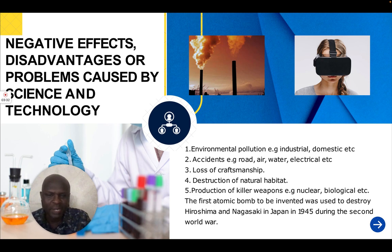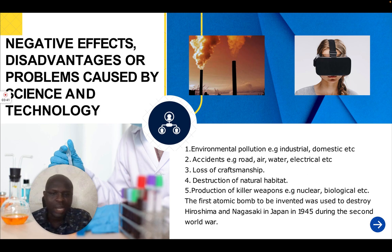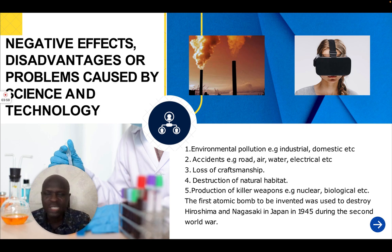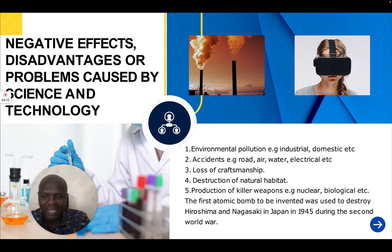We also experience accidents — for example, on the road, in the air, on water, and electrical accidents. So accidents occur as a result of science and technology. And because of science and technology, we have lost our craftsmanship — that is, people no longer want to produce things using their hands; they now depend majorly on machines. We also have destruction of natural habitats, like chemicals destroying the habitat and living things in the water, like fish.